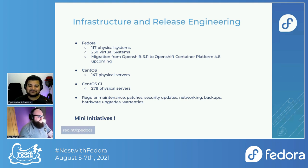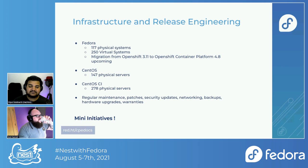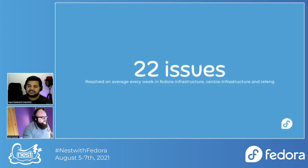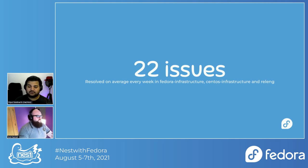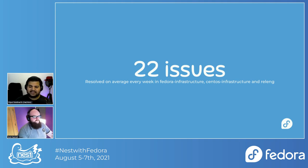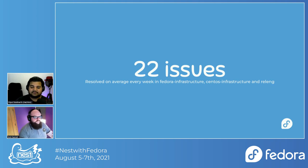We are trying to work on mini-initiatives as part of the infrastructure and release engineering team, where people can work on these things on certain days when not all CPE team members are on an initiative, or they can talk to their managers and book a sprint of a week or two to finish those things. Infrastructure and release engineering mainly work on tickets that community members open — pagure.io slash Fedora infrastructure for Fedora-focused things, CentOS Infra on CentOS related things, and RelEng for release engineering work. On average, roughly 22 issues per week are being solved by the Infra and RelEng team.